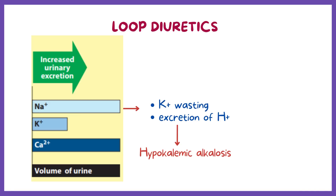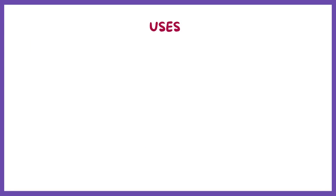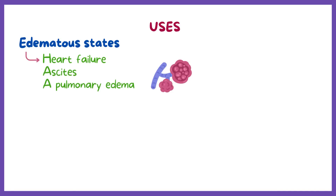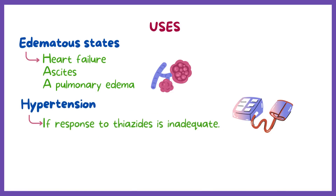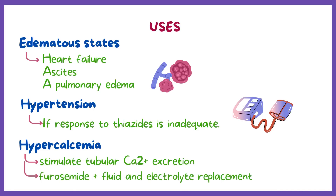Loop diuretics also reduce pulmonary vascular pressure. Ethacrynic acid is a moderately effective uricosuric drug if blood volume is maintained. The major application of loop diuretics is in the treatment of edematous states — for example, heart failure, ascites, and acute pulmonary edema. They are sometimes used in hypertension if response to thiazides is inadequate. A less common but important application is in the treatment of severe hypercalcemia, because they stimulate tubular calcium excretion. This life-threatening condition can often be managed with large doses of furosemide together with fluid and electrolyte replacement.